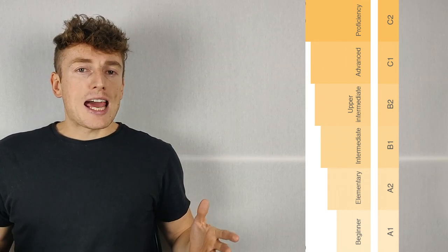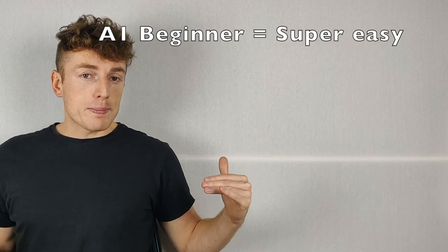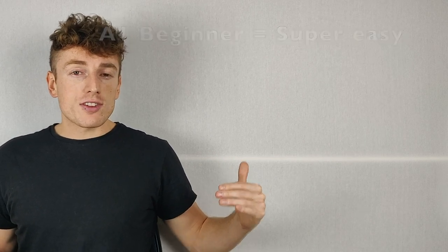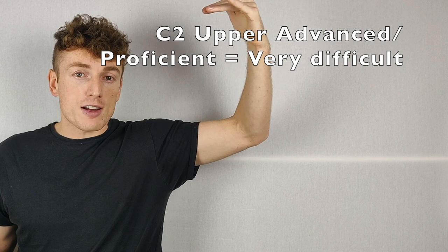When you're learning a foreign language, each level can be explained by resources. If you're at A1 beginner, you use very easy resources, and if you're at C2 upper advanced, proficient, then you use very difficult resources.